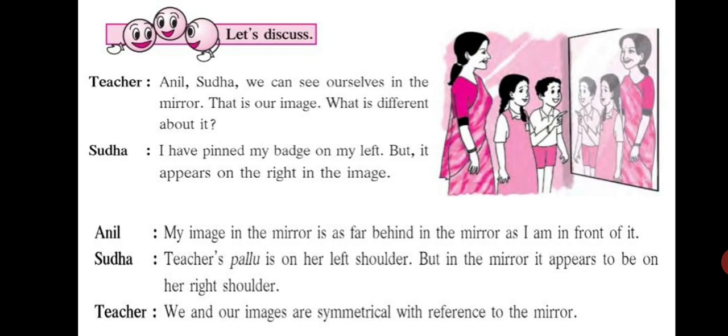Sudha replies, I have pinned my badge on my left, but it appears on the right in the image. Anil says, my image in the mirror is as far behind in the mirror as I am in front of it. Sudha says, teacher's pallu is on the left shoulder, but in the mirror it appears to be on the right shoulder. So, the teacher finally says, we and our images are symmetrical with reference to the mirror.